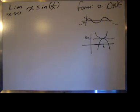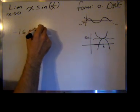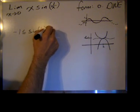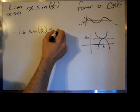The way you do this is you set up an inequality. Based on the sine graph, we know that the sine of 1 over x is greater than or equal to negative 1...